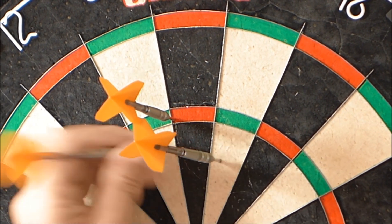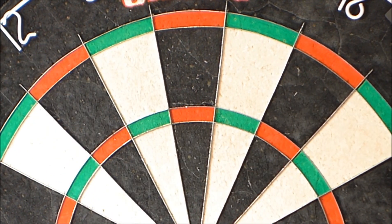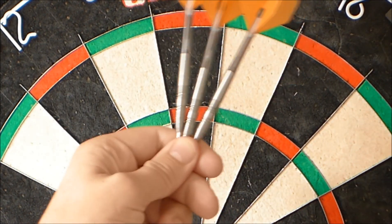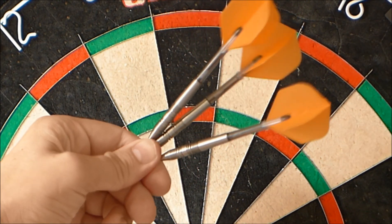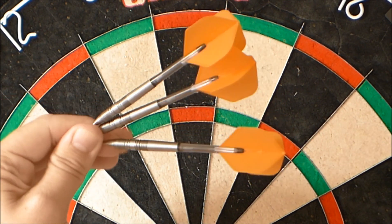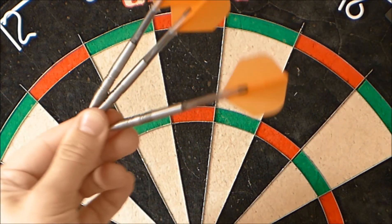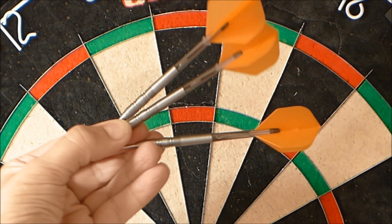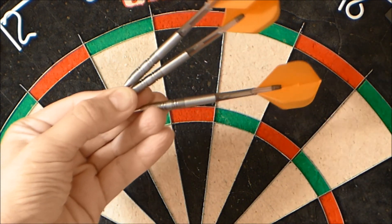There you go. Just a quick look at my Grey's custom handmade darts. 90% tungsten, 23 gram. Done quite a good job I think. That's the end of this, thanks for watching.